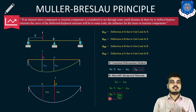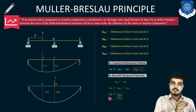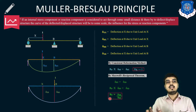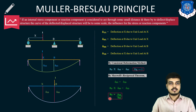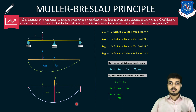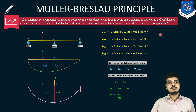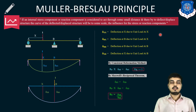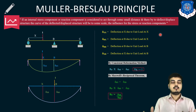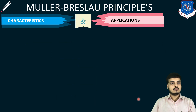To summarize, the Müller-Breslau principle states that if a load is applied there will be some deformation, and that deformation will be to some scale of its influence line for the stress or reaction component. We applied unit load one by one at point x and point B, and with the help of this entire relation we can find out the ILD — Influence Line Diagram — for an indeterminate structure. The ILD is made for moving loads, such as moving vehicles or train loads on a bridge structure.